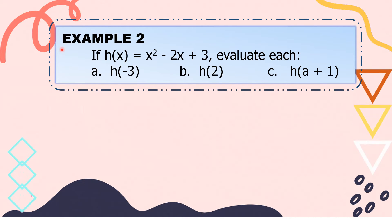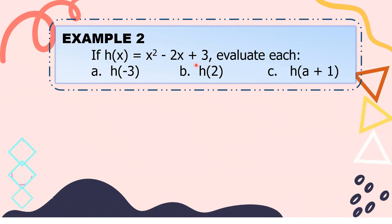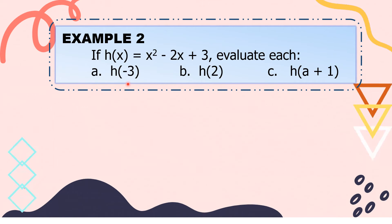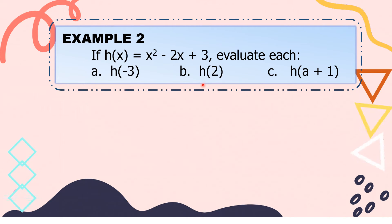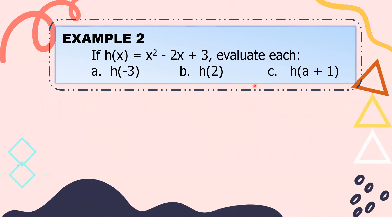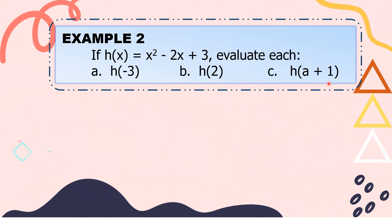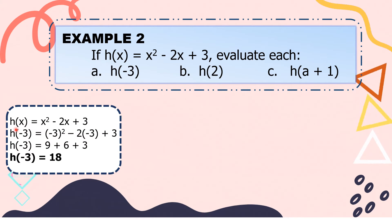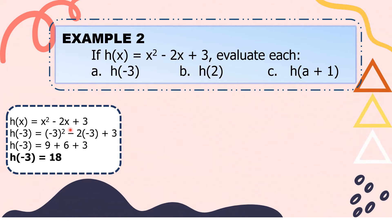Let's have example number 2. If h of x equals x squared minus 2x plus 3, evaluate each. A — h of negative 3, where the value of x is negative 3. Letter B — h of positive 2, where the value of x is positive 2. C — h of a plus 1, where the value of x is a plus 1. For letter A, our function is h of x equals x squared minus 2x plus 3.